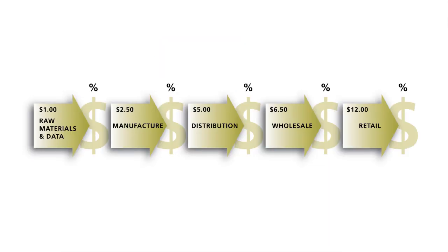How are you able to use the industry value chain to determine who has the power? Normally, an organisation or a link in the industry value chain that has the fewest competitors holds the power. A simple example would be three distributors compared to two hundred manufacturers — who has the power there? The distribution.